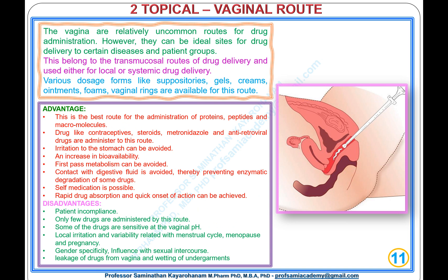Type 2, Topical: Vaginal Route. The vagina is a relatively uncommon route for drug administration; however, it can be an ideal site for drug delivery for certain diseases and patient groups. This transmucosal route is used for local or systemic drug delivery. Various dosage forms — suppositories, gels, creams, ointments, and foams — are available for this route.